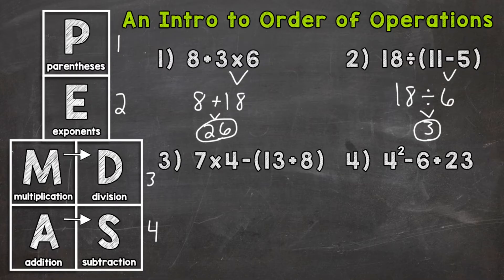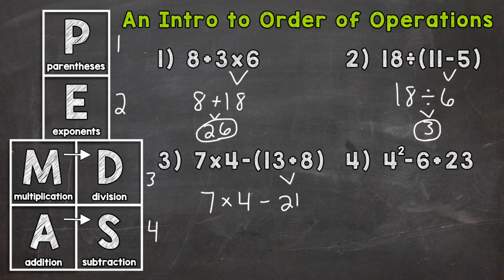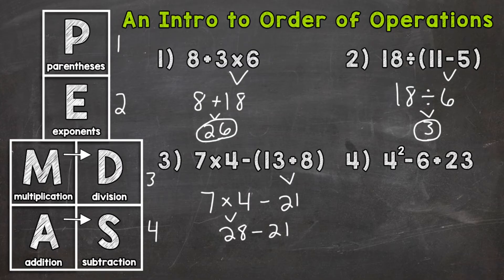On to number three, where we have seven times four minus parentheses, 13 plus eight, end parentheses. Do we have any parentheses? Yes — so that's where we start. 13 plus eight is 21. Bring down everything we did not use: the subtraction, the four, the multiplication, and the seven. Any parentheses? No. Exponents? No. Multiplication or division? Yes — seven times four is 28. Bring down the subtraction and the 21. 28 minus 21 is seven, and that's our final answer.